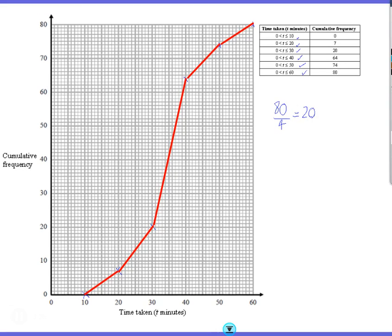So all we're going to have to do is we're going to go across. So that's 60. We're going to go across until we get to our graph, and then we're going to go exactly down. So from here, straight down, and read the number at the bottom, and I make that 39.